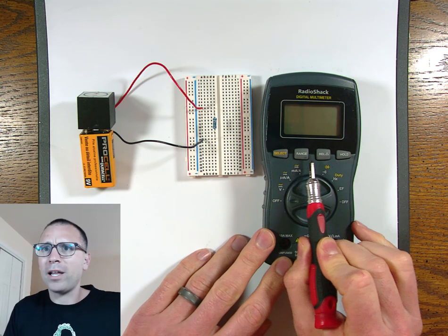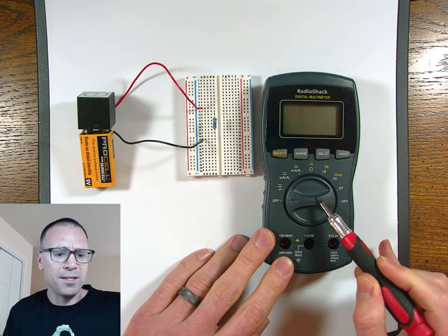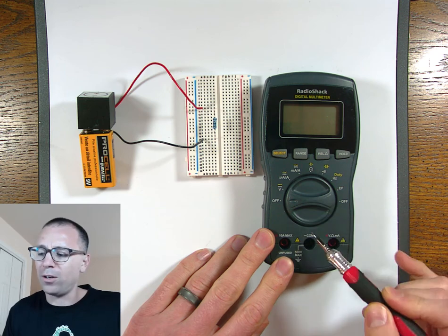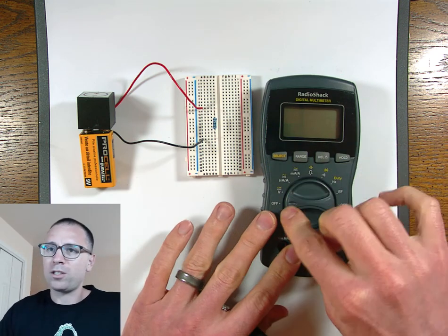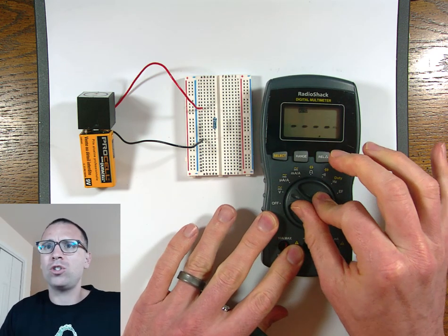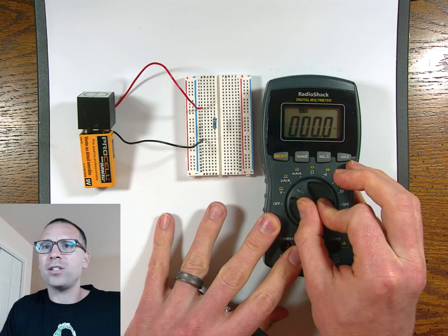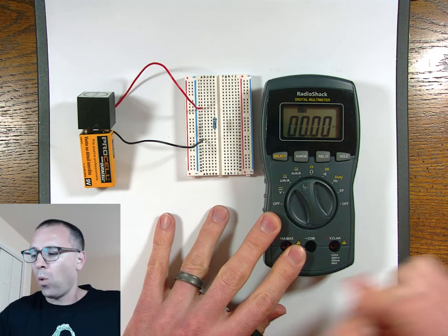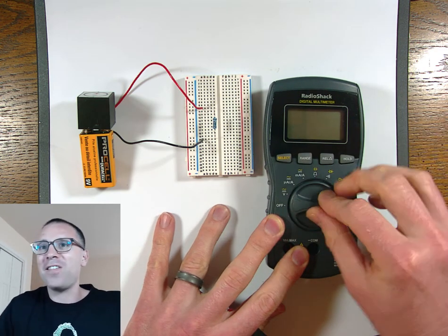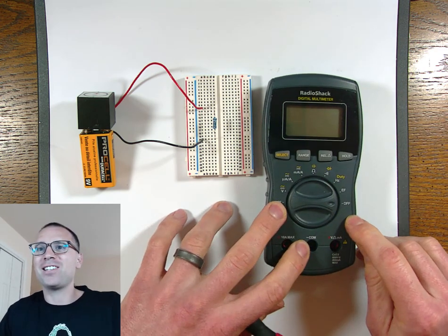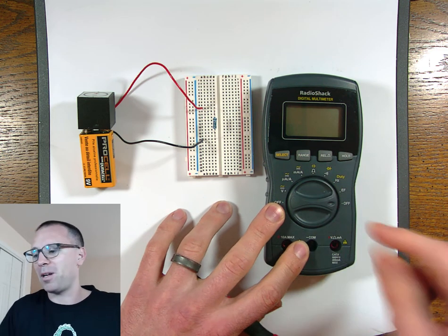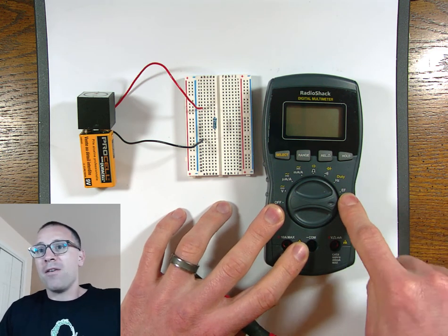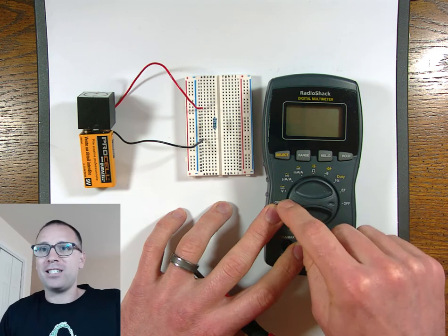These buttons we'll talk about later. What we're going to talk about today is the function and power dial. When I turn this from the off position onto one of the options, I am turning the power on. It's kind of fun that there are two off positions and that's because sometimes I'm using features on this side and I don't want to have to be lazy and come all the way back.